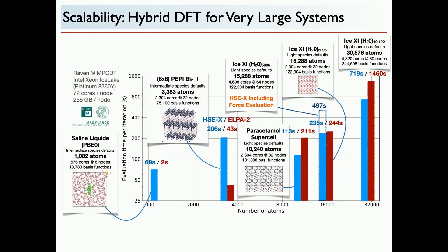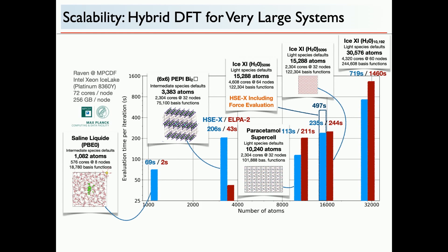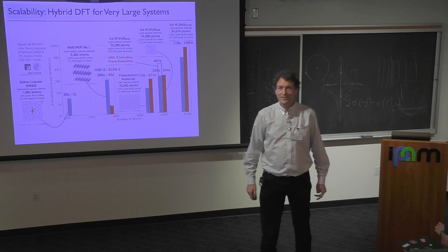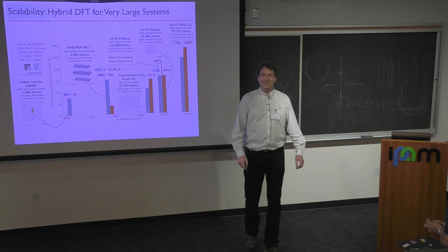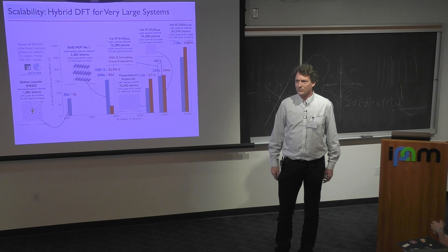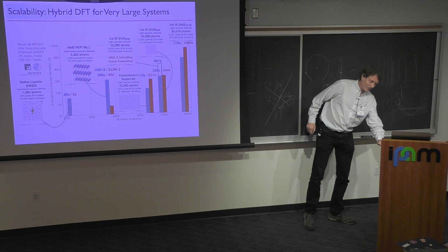It occurred to me that had he used a few more atoms, he would have beaten the TPU calculation, but on a regular Intel machine with a standard ELPA solver. So very large scale hybrid DFT calculations are now feasible.